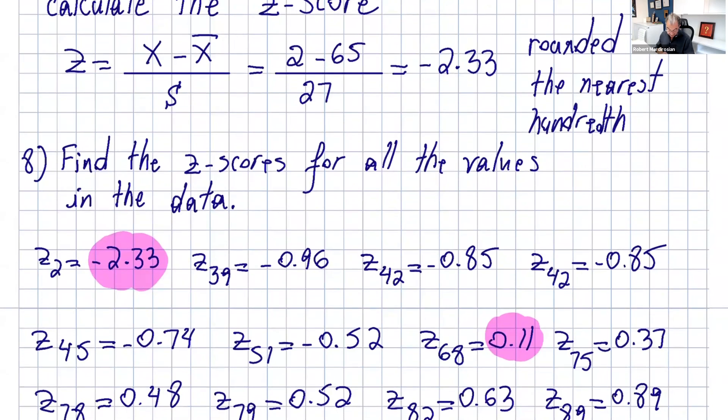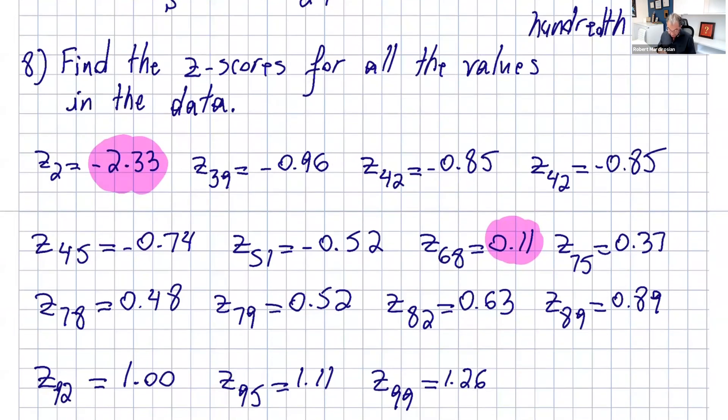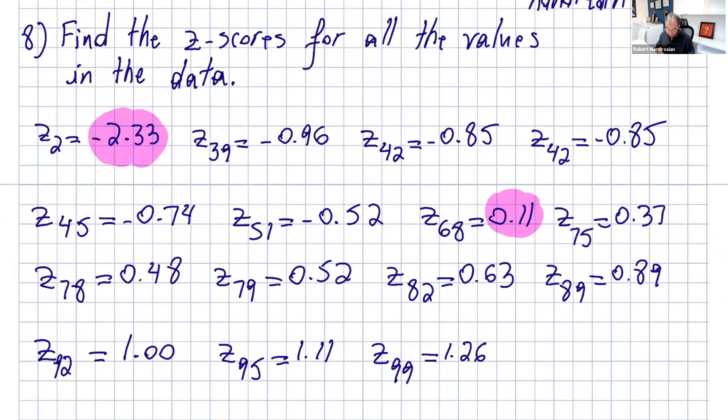Find the z-score for all the values in the data. This is good practice. It's just getting used to this formula because you're going to see this a lot. We get negative numbers first, then positive numbers from here. All negative numbers are before the mean, all positive z-scores are after the mean. This z-score is less than negative 2, so 2 is an unusual number. But the highest z-score is 1.26, so 99 is not unusual.